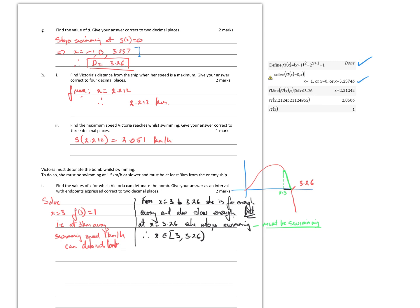Find Victoria's distance from the ship when her speed is a maximum. You can use the function max on the CAS. Function max of that function gives 2.212 kilometres. The maximum speed is the y-value at that point, which is approximately 2.05 — make sure you put the correct number of decimal places.